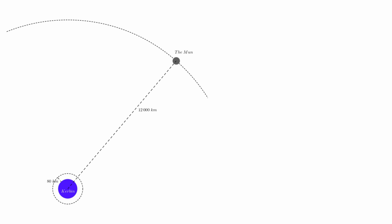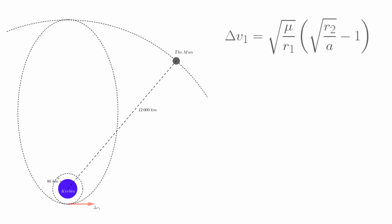Our transfer out to the moon is a straight up Hohmann transfer, the very thing the Vis-Viva equations were built for. Remember that the first equation calculates the delta V of the burn at the lower of the two altitudes, the R1. This is what we need to calculate our moon orbit injection. It is important to remember that R1 and R2 are measured from Kerbin's center, not Kerbin's surface. Our starting altitude is 80 kilometers above Kerbin's surface. Since Kerbin has a radius of 600 kilometers, this gives an R1 of 680 kilometers. R2 is just the radius of the moon's orbit, 12 million meters.